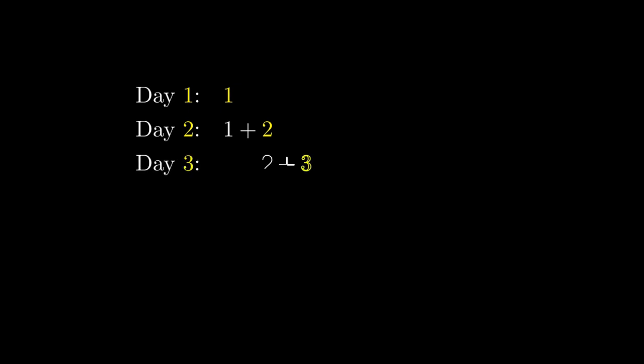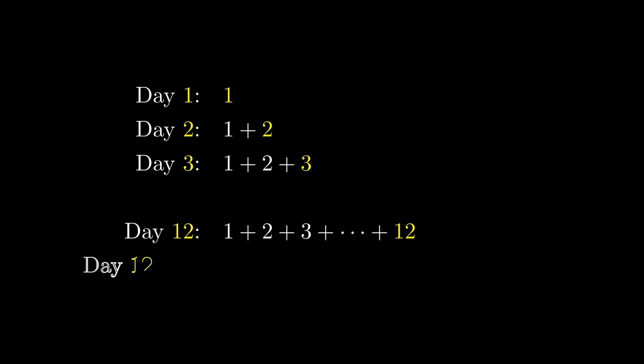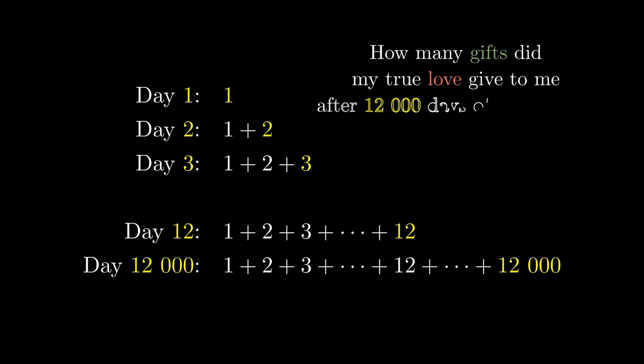On the first day of Christmas, my true love gave to me a partridge in a pear tree. On the second day of Christmas, she gave me 2 turtle doves and a partridge in a pear tree. On the third day, she gave me 3 gifts followed by 2 gifts followed by 1 gift. This pattern repeats on the 12th day as well as the 12,000th day. How many gifts did my true love give to me at the end of 12,000 days?